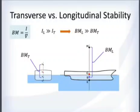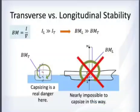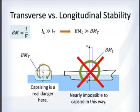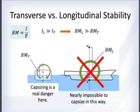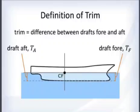Because the longitudinal BM is so large, it is almost impossible to capsize a ship end over end, so we do not worry about that. Instead, for longitudinal stability we worry about trim — the difference between the draft forward and the draft aft.